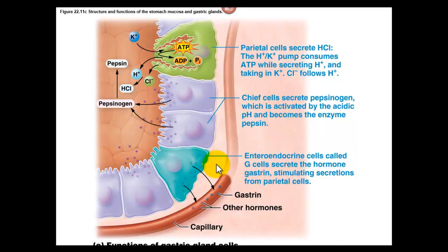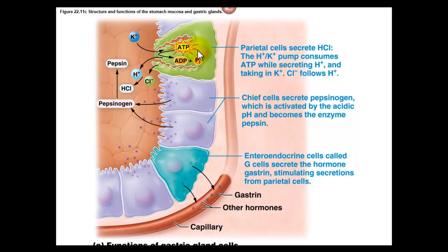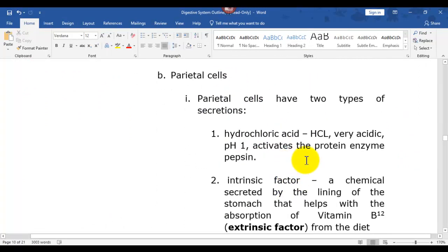Here's the gastric pit. At the top you have goblet cells — mucus cells — that are making protective mucus. At the bottom part of this gland you have parietal cells and chief cells. Parietal cells produce two things: hydrochloric acid and intrinsic factor. Hydrochloric acid is needed to activate protein enzymes — all protein enzymes are released inactive, otherwise they would destroy the cell that's producing them.